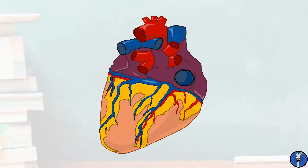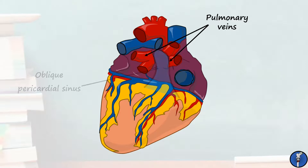The four pulmonary veins carry oxygenated blood from both of the lungs back into the left atrium of the heart. They pass through the fibrous pericardium and are covered by serous pericardium whilst abutting the heart. They enter the superior part of the left atrium, and between them is the oblique pericardial sinus, as mentioned in a previous video. The pulmonary veins form the most posterior part of the base of the heart and are at least partially responsible for anchoring the heart in place on its posterior wall.